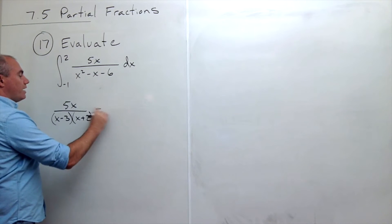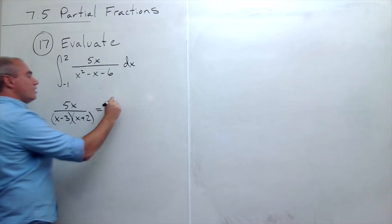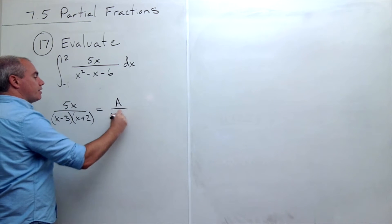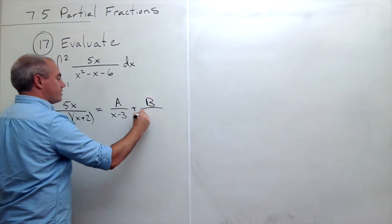Alright, so if I were to break this up into partial fractions, these are both linear terms. So I get A over x minus 3 plus B over x plus 2.